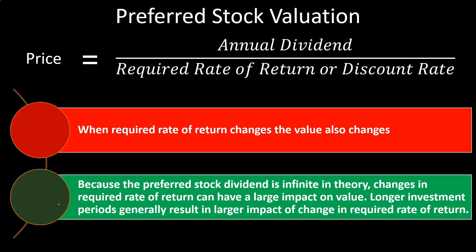Larger investment periods generally result in a larger impact from changes in the required rate of return. We saw this with bonds — a 5-year bond versus a 10-, 20-, or 30-year bond: the longer the maturity, the bigger the impact of market rate changes on value. With preferred stock there is no end date to maturity — we're going out indefinitely, beyond even the 30-year bond. Therefore, changes in the required rate of return or discount rate could have the maximum possible impact on the preferred stock's price or valuation.